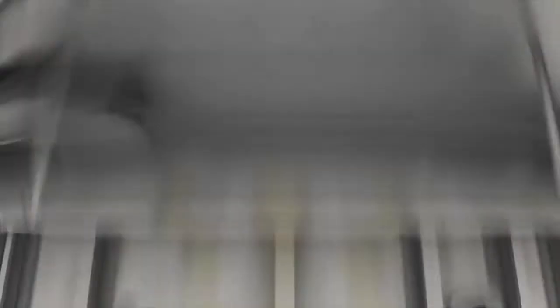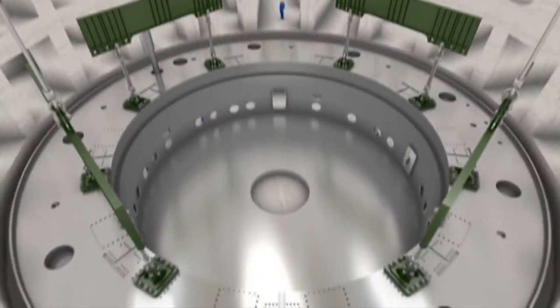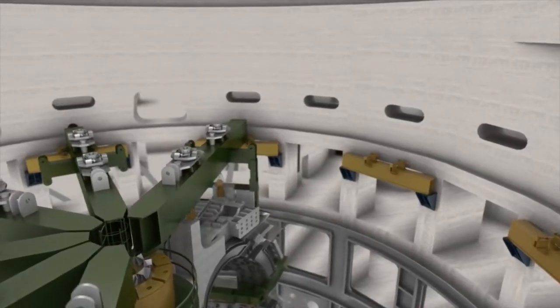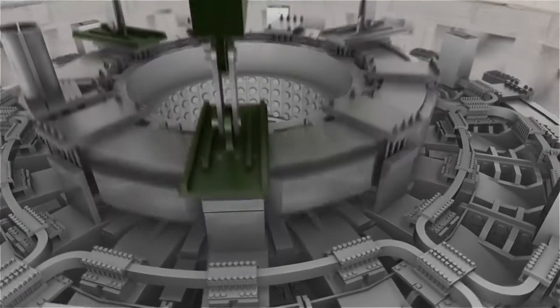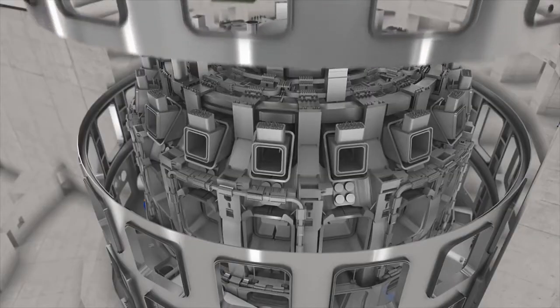The ITER assembly commences with the installation of the cryostat base, followed by the nine 40-degree sectors of the vacuum vessel, the surrounding thermal shields, the superconducting magnets, and finally the cryostat.